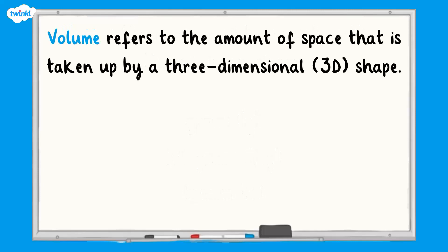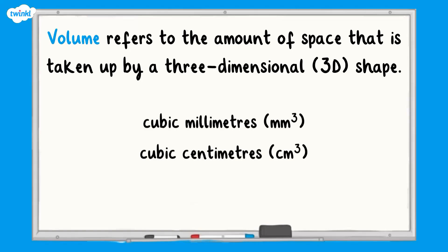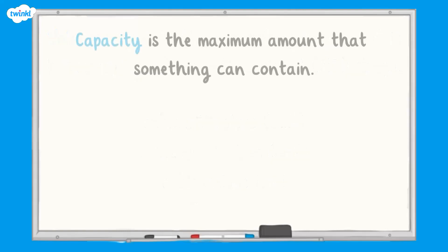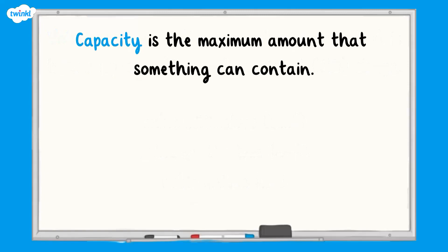The terms volume and capacity can sometimes get mixed up, but there's an easy way to remember the difference. Volume simply refers to the amount of space taken up by a three-dimensional shape and is often measured in cubic millimetres, cubic centimetres, or cubic metres. Capacity is the maximum amount that something can contain and is often measured in millilitres and litres.